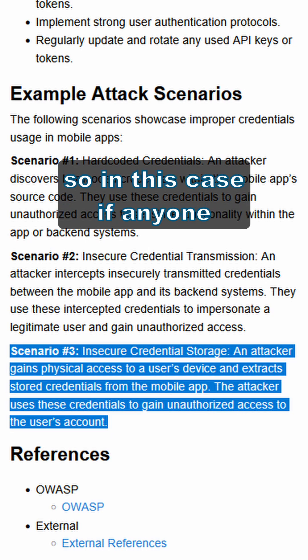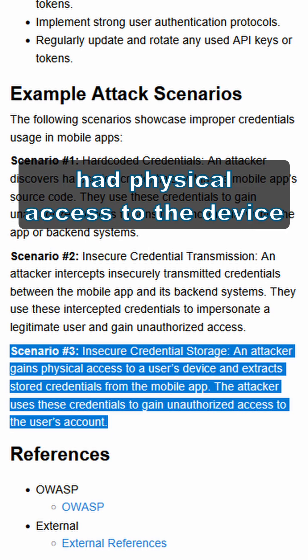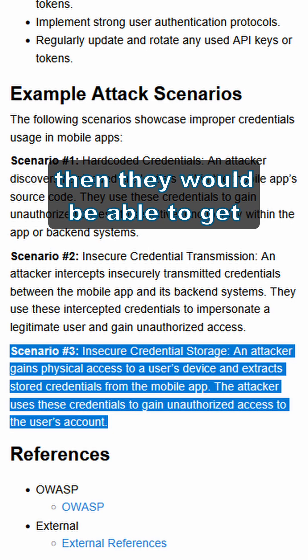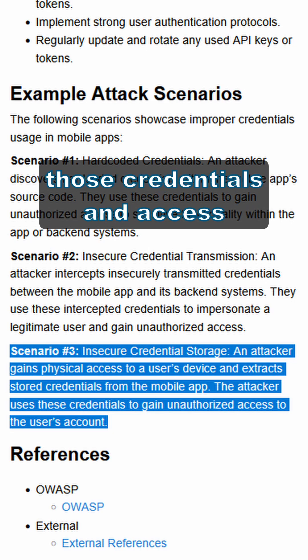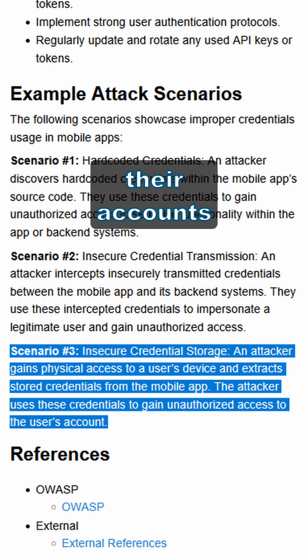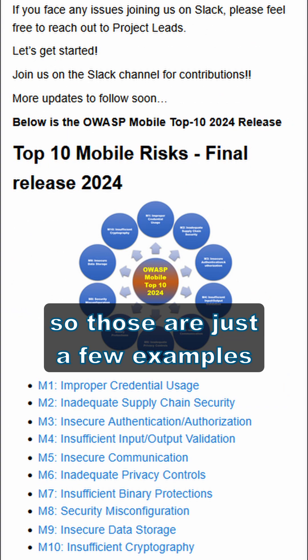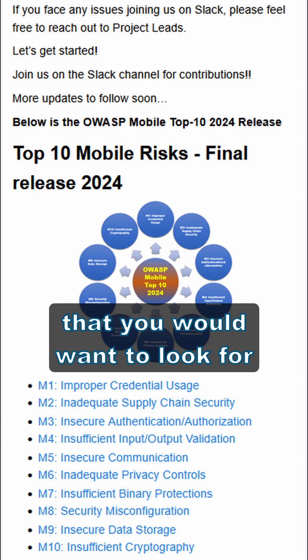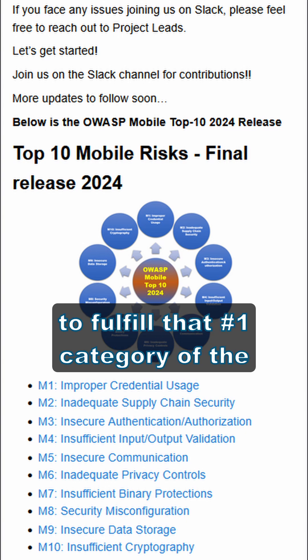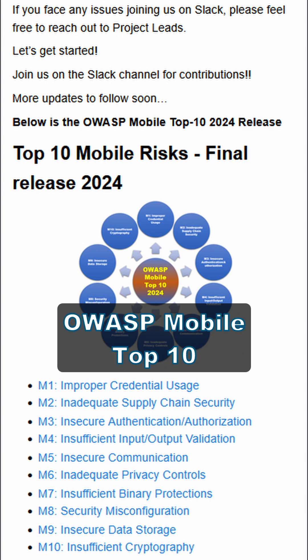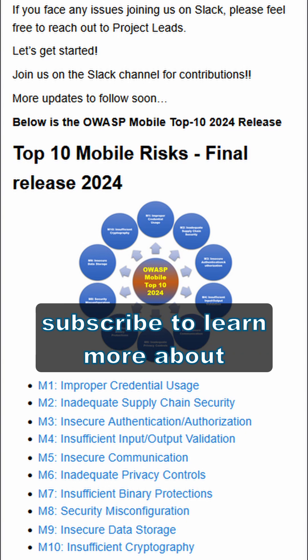So in this case, if anyone was able to have physical access to a mobile device, then they would be able to get those credentials and access their accounts. Those are just a few examples of the types of attacks you would want to look for to fulfill that number one category of the OWASP Mobile Top 10.